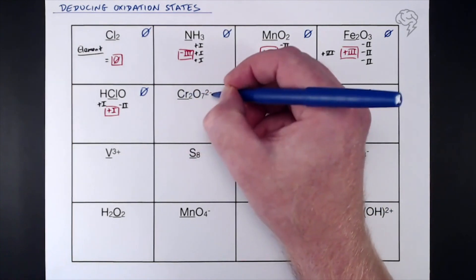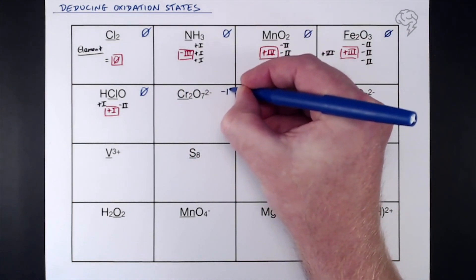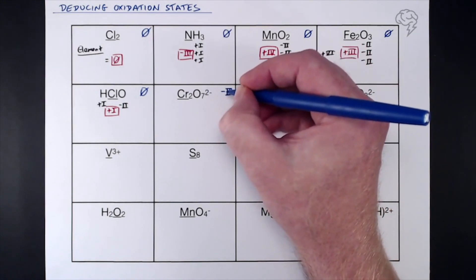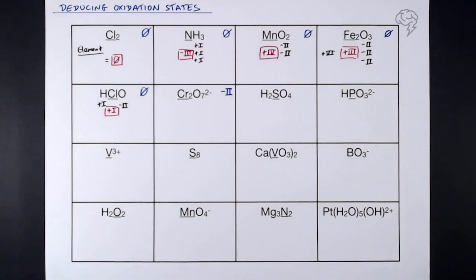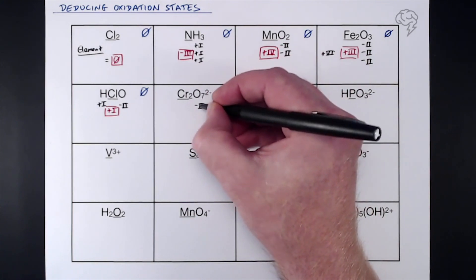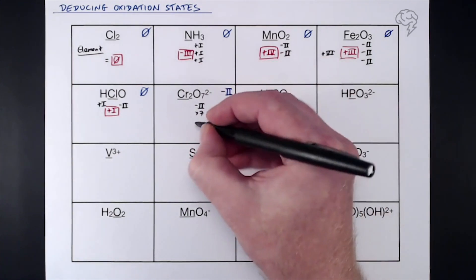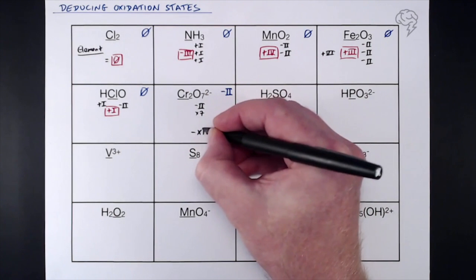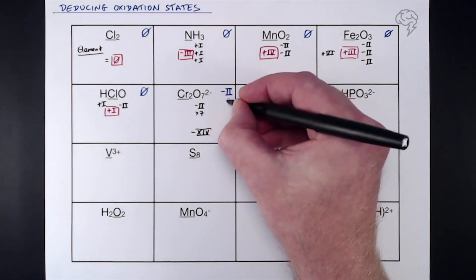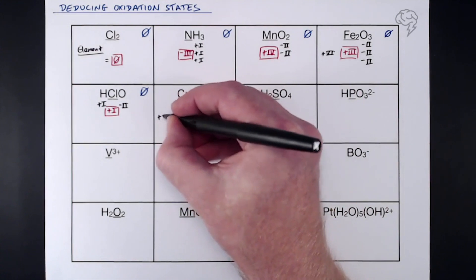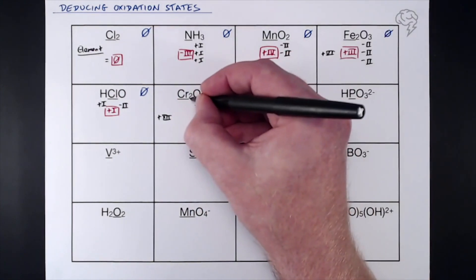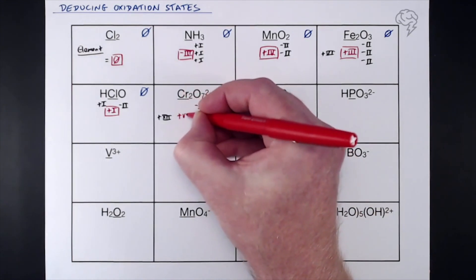The dichromate ion Cr₂O₇²⁻ — the overall oxidation state is −2 because it has a 2− charge; that's our target, not zero. We're finding chromium. Each oxygen is −2, and we've got seven of them: 7 × (−2) = −14. We need to get from −14 up to −2, so the chromium collectively accounts for +12. There are two chromium atoms, so each chromium must be +6.